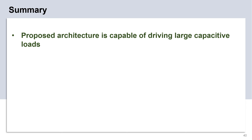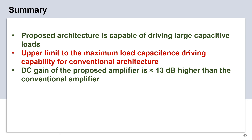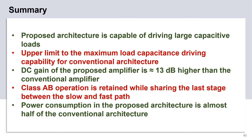Thus to summarize, the proposed architecture can drive large capacitive loads which might not even be possible with the conventional architecture. The problems associated with the conventional architecture put an upper bound on the maximum capacitive load that it can drive. Since the fast path is AC coupled to the slow path, the DC gain of the proposed amplifier is almost 13 dB higher compared to the conventional one. The power-hungry last stage is shared between the fast and the slow path while ensuring class AB operation, making the power dissipation in the proposed amplifier almost half of the conventional. So we attacked the problems plaguing the conventional feed-forward architecture one by one. The proposed amplifier shows promising results in the preliminary simulations and is an ideal candidate for use in the mixer-first receivers. With this, I conclude my presentation. Thank you.